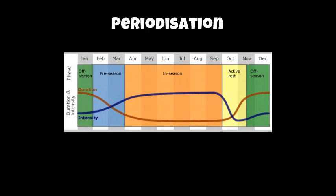On the screen is a graph showing a plan of periodization. You can see we have off-season, pre-season and in-season. So three main mesocycles that I've just discussed.